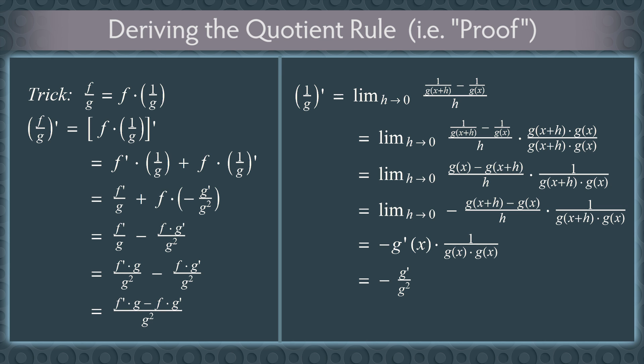In mathematics, when you're done proving something it's common to write a small square at the end — that's the symbolic way to say the proof is done.